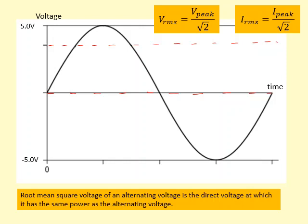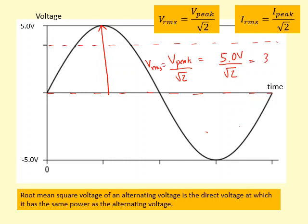V peak is the maximum voltage. In this case, V peak is equal to 5 volts. If I divide that by root 2, I can get the root mean square voltage. In this question, it turns out to be 3.54 volts. This is the value I should use when calculating the power in equations like P equals IV and so on. This will give me the correct power.